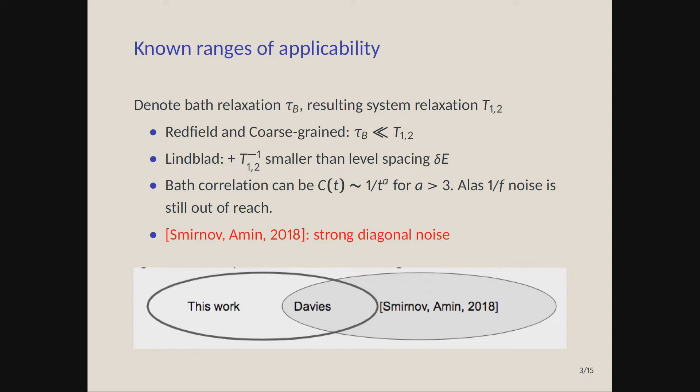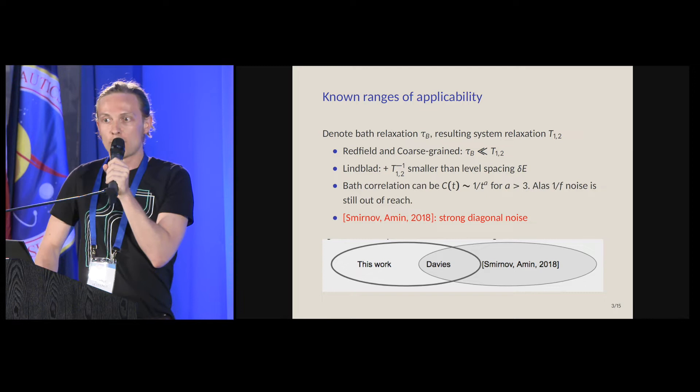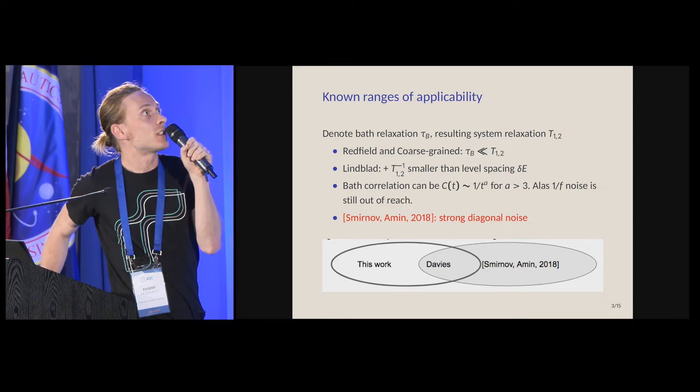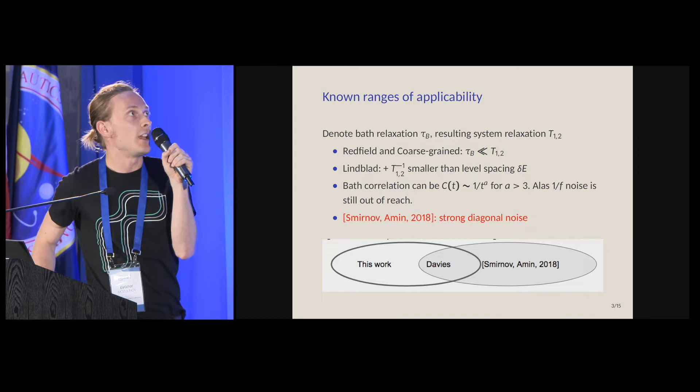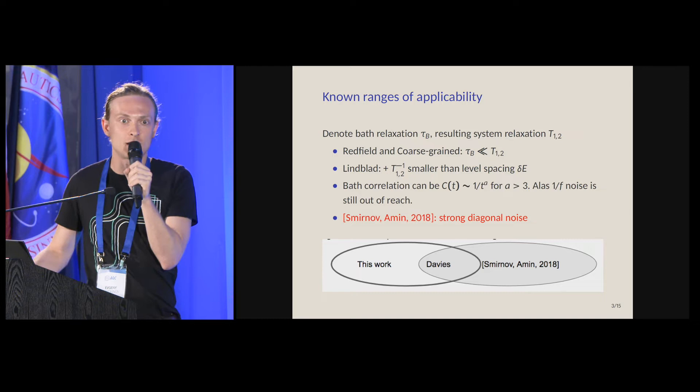That has to do with the ranges of applicability. This new equation that I'm presenting has a name: it's called coarse-grained equation. Dothers called it that because they called the procedure of time averaging coarse-graining. For both Redfield and the coarse-grained equation, the range of applicability is given just by one condition. The relaxation time of the environment should be much faster than the relaxation time of the system that is induced by coupling to the environment. For the more familiar Lindblad equation with Davies generators, there is one extra condition that the level spacing should be bigger than the corresponding relaxation rate of the system. That condition is crazy to ask for in adiabatic quantum computing because the gap in our system sometimes gets really small.